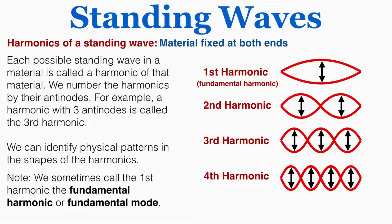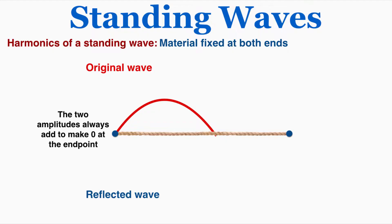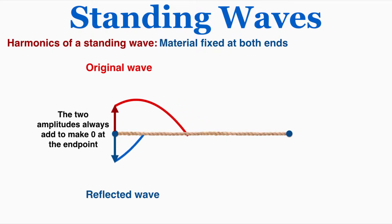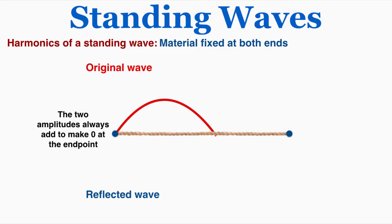We also refer to the first harmonic of a material as the fundamental harmonic or fundamental mode. To visualize what's happening at those fixed endpoints in terms of wave reflection: as one of the waves moves into that fixed point, it's reflected and inverted. You can see that when a traveling wave crest moves into the fixed point it's reflected back, and those total amplitudes always add together to make zero because they're perfectly balancing each other out.